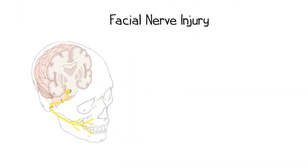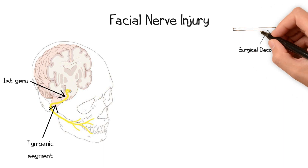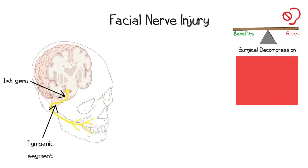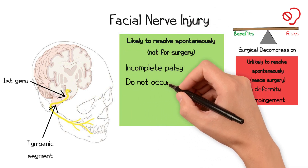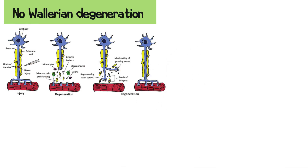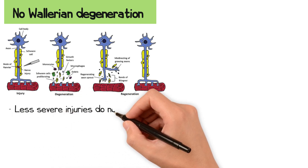The facial nerve is most likely to be injured at the first genu where it makes a sharp bend. Another common site of injury is in the tympanic segment where the nerve runs horizontally across the middle ear. The decision to surgically decompress the facial nerve in cases of post-traumatic palsy must weigh the potential benefits against the risks, particularly the risk of hearing loss resulting from the ossicular chain disruption needed to access and decompress the facial nerve. Unless there is an obvious step deformity or clear site of bony impingement causing a facial palsy, decompression is best reserved for cases unlikely to improve spontaneously. Palsies that are less than complete, do not occur within 72 hours of the injury, and do not result in Wallerian degeneration are more likely to resolve spontaneously. Wallerian degeneration occurs when a nerve is severely injured; the portion of the nerve distal to the injury site degenerates over approximately 10 days before regenerating, while less severe injuries do not induce Wallerian degeneration.